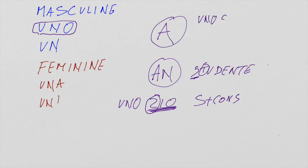So it will be UNO studente. And another case with the group PS, as in the word psychologist. So in this case you will say UNO PSICOLOGO. So you use UNO just if you have a word starting with Z, with a group of S plus consonant, and with a masculine word starting with PS.